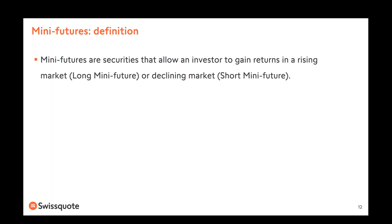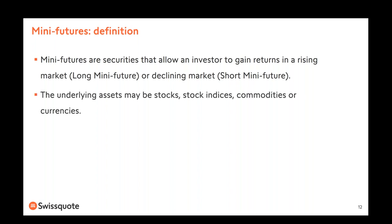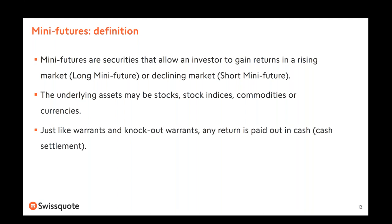Mini futures are securities that allow an investor to gain returns in a rising market if you buy a long mini future, or in a declining market if you buy a short mini future. The underlying asset may be equities, stock indices, commodities, or currencies — just like warrants and knockout warrants. Any return is paid out in cash, so there is a cash settlement; there is never the physical delivery of the underlying asset.